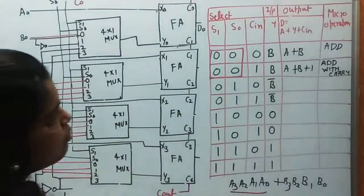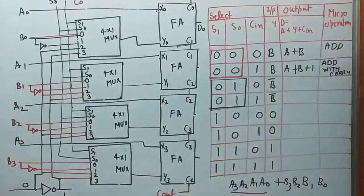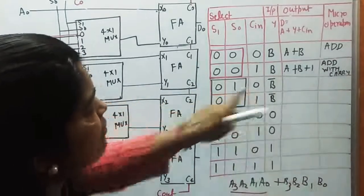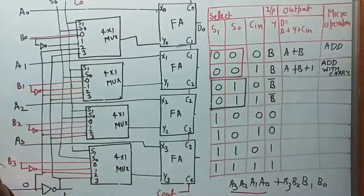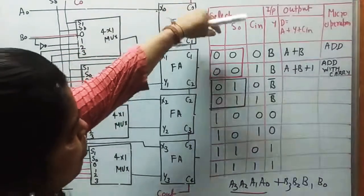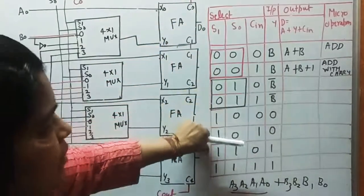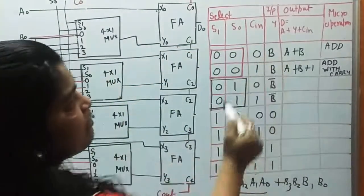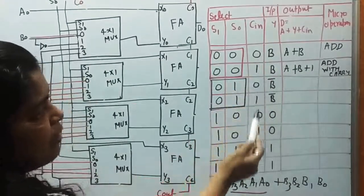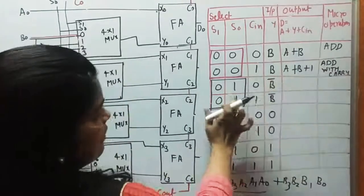In the B-complement portion, when selection lines are 01, Cin can be 0 or 1. S1 has only four combinations: 00, 01, 10, 11. The Cin varies between 0 and 1, which is why each combination appears twice — with B and B-complement values written accordingly.